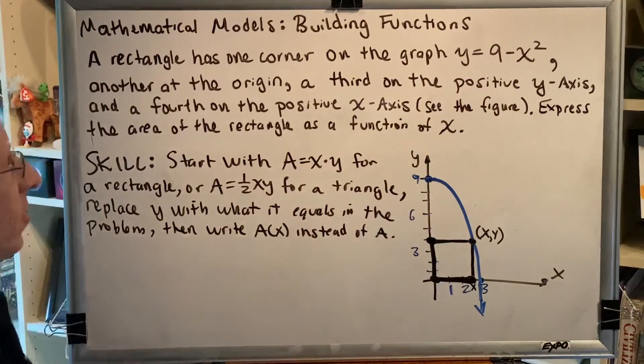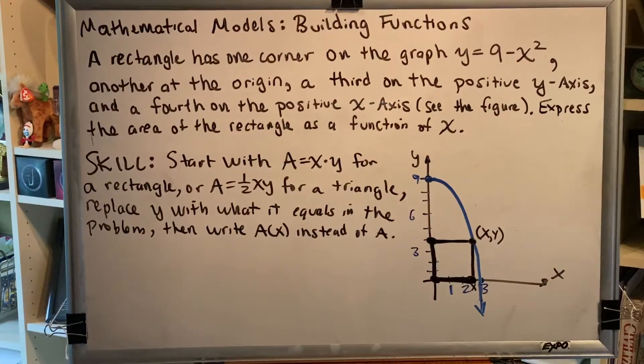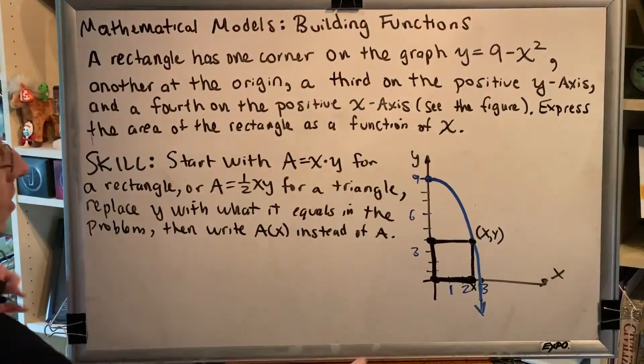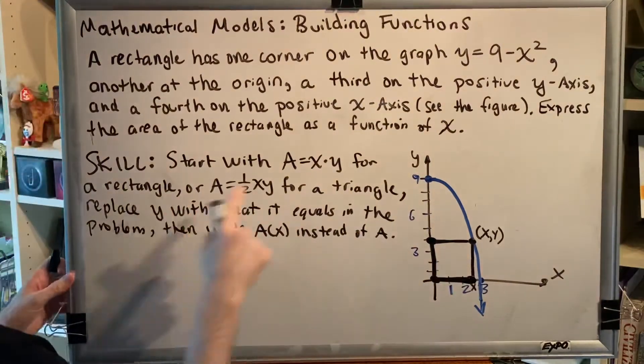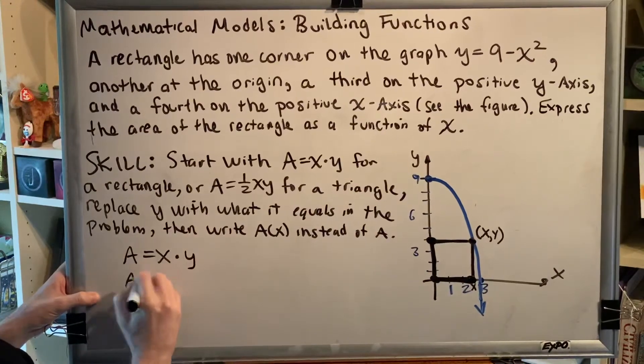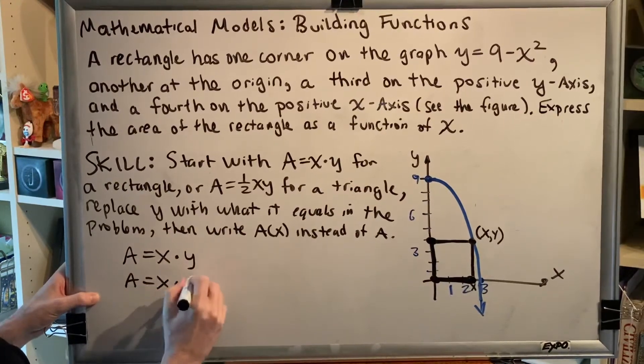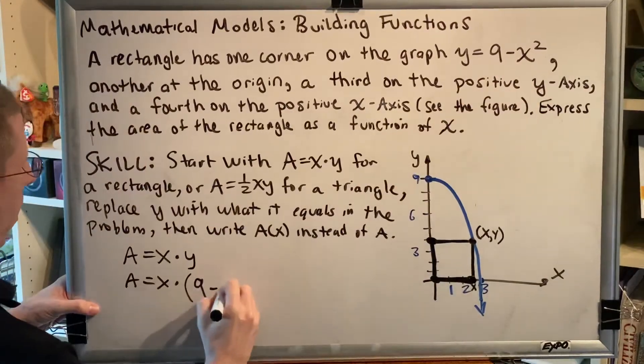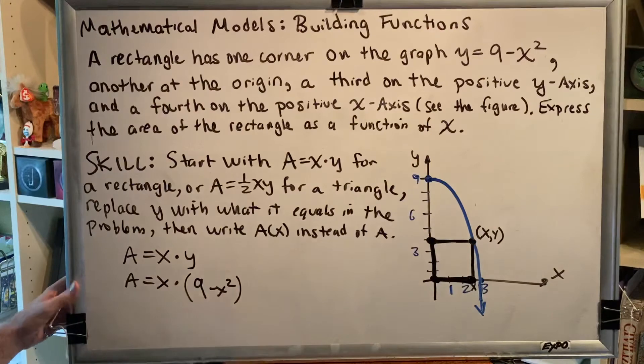All right, so here we go. We are now going to express the area of the rectangle as a function of x. This is a rectangle, so we start with A equals x times y. Next, replace y with what it equals: y equals 9 minus x squared.